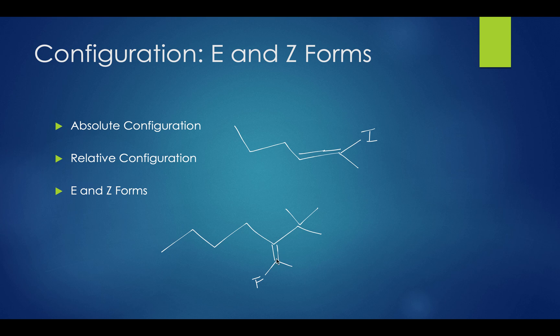E and Z nomenclature is used on compounds with double bonds. E forms have two high-priority functional groups on opposite sides of the double bond, while Z forms have them on the same side. We find these high-priority functional groups by looking at the atomic number present on these groups. The higher the atomic number, the higher the priority. So let's look at this compound really quick. We can see that iodine has the highest atomic number, so this will be the highest priority group. Same thing with this compound. Fluorine has the highest atomic number, so it's the highest priority functional group.